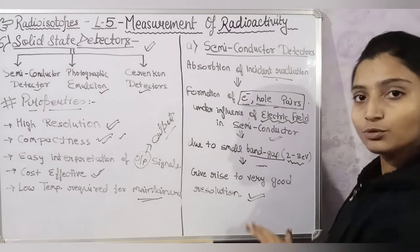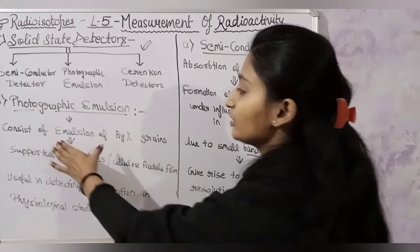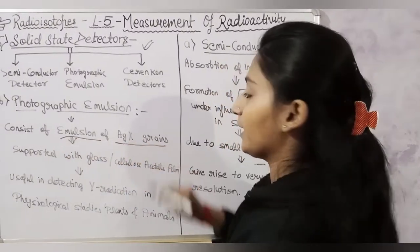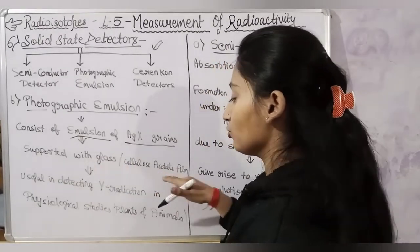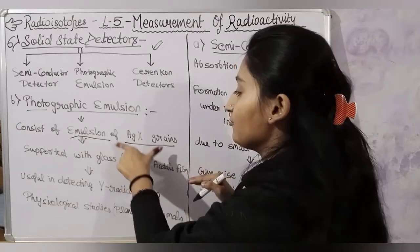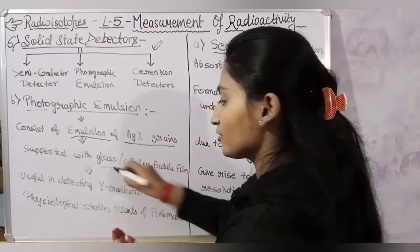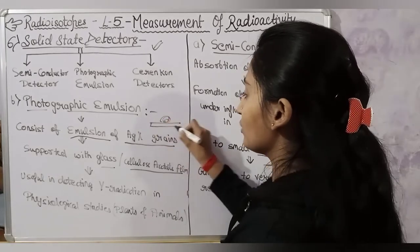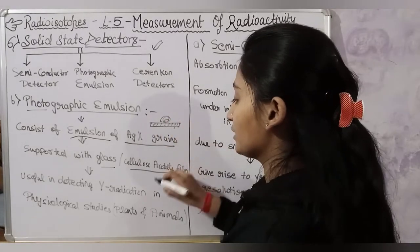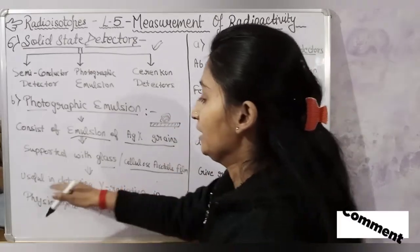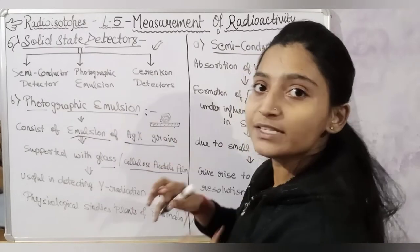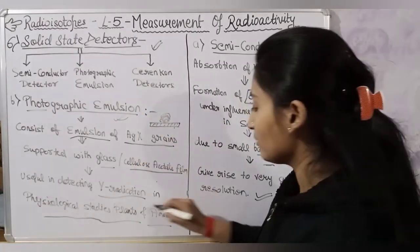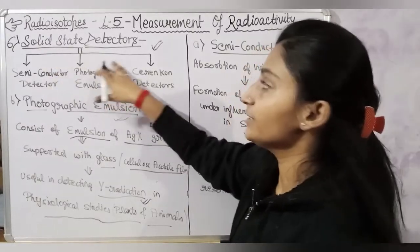What consists of photographic emulsion? First, there is the emulsion of AgX — the emulsion of silver halide grains — supported on a glass or cellulose acetate film. We place the silver halide emulsion on the glass or cellulose acetate film. Photographic emulsions are used to detect gamma radiations. This is the point of solid state detectors.